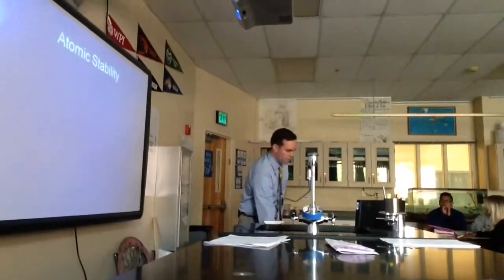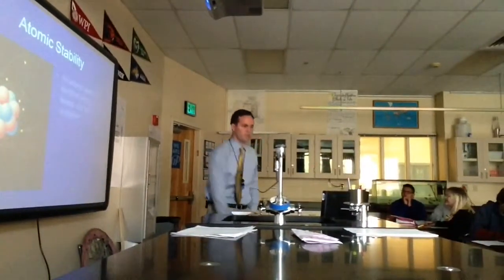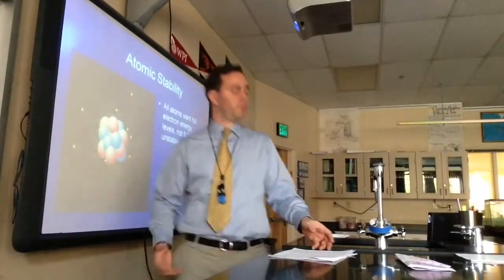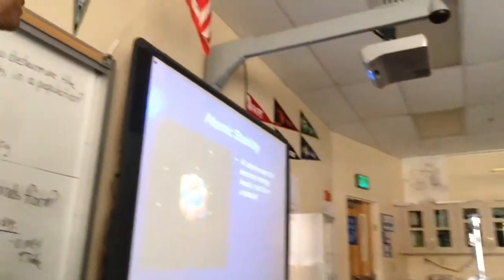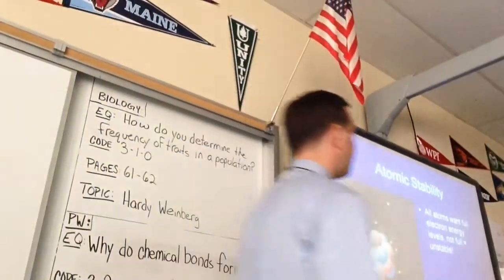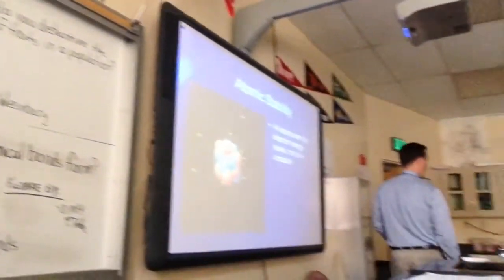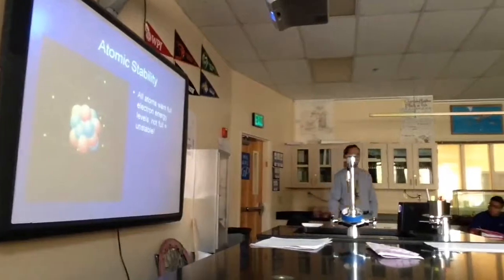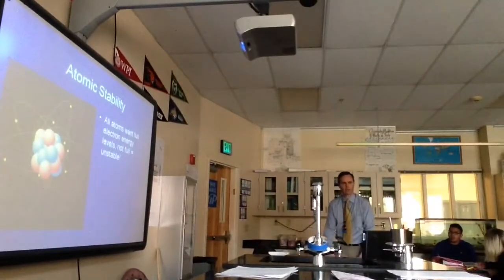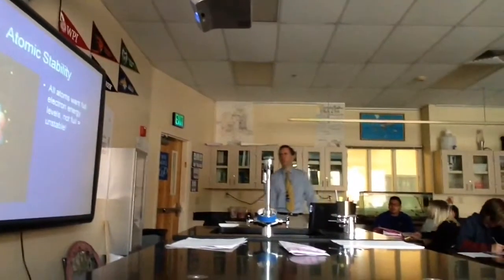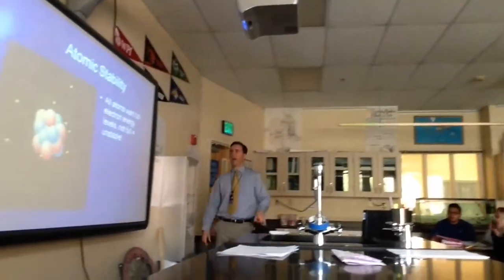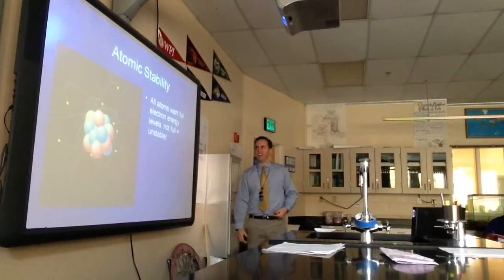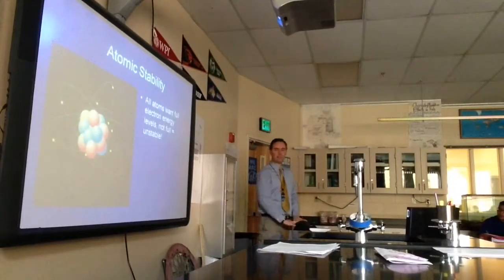So first thing we're going to get down is this. Atoms only bond for a specific reason, and that is because atoms want a full energy level on the outside. Do you remember what that outside layer of electrons is called? The valence shell. So for an atom to be stable, it's got to have a full valence shell. If it's not full, then it is an unstable atom.